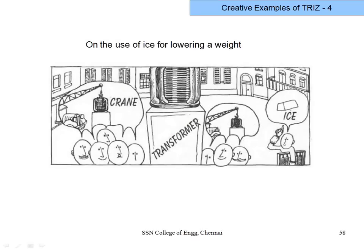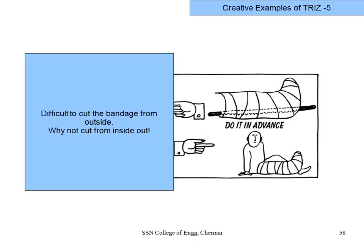A very important example the inventor describes: in Russia, a transformer was malfunctioning and had to be lowered, but no crane was available. The inventor suggested moving it horizontally onto a block of ice — ice is available everywhere in Russia. After six or seven hours the ice melts, the water drains off, and the transformer lowers automatically. Ice can serve as a substitute for a crane, at least for the lowering function. Any system can do much more than you think — use your available resources.